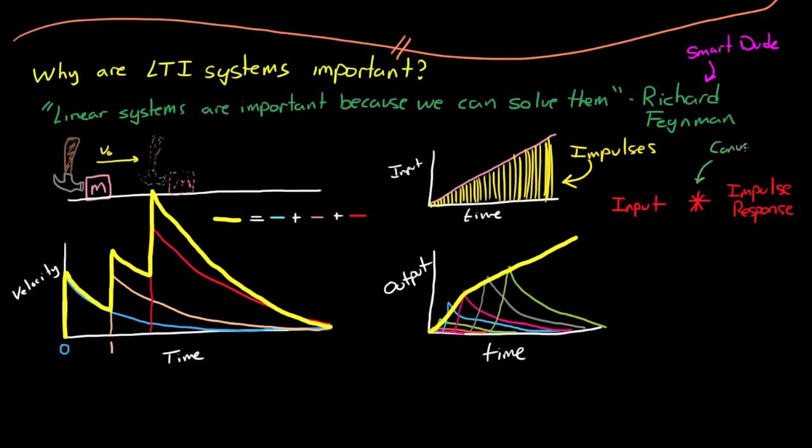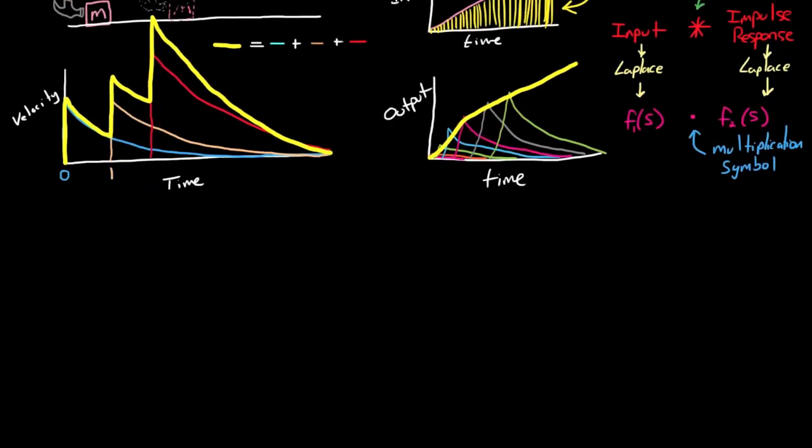Which can be a very difficult integration. However, if we first transform the impulse response and the input signal to the S-domain using the Laplace transform, then convolution becomes multiplication. Now this is the basis behind transfer functions and why in the S-domain they are only applicable to LTI systems.